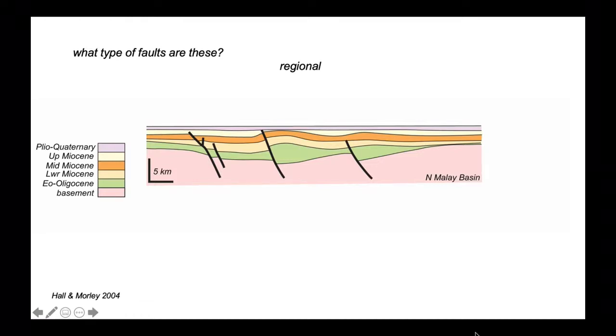What type of faults are these? To answer that question, let's apply the regional concept for an individual horizon. Its regional is where it would be had the local structures not developed—its regional orientation and elevation.